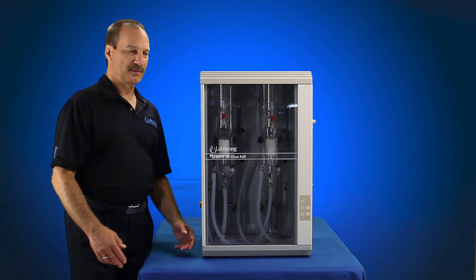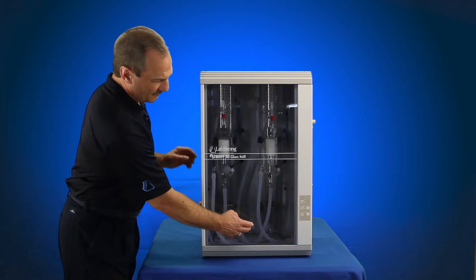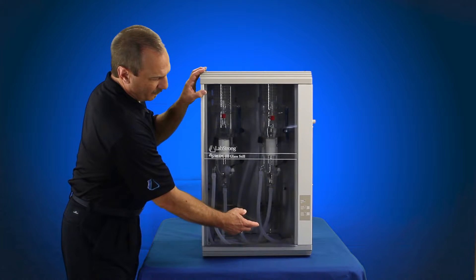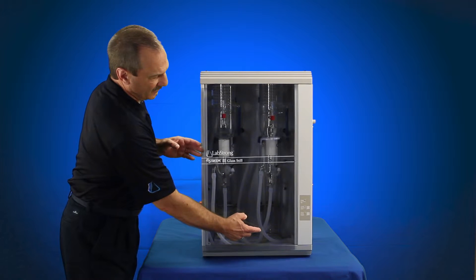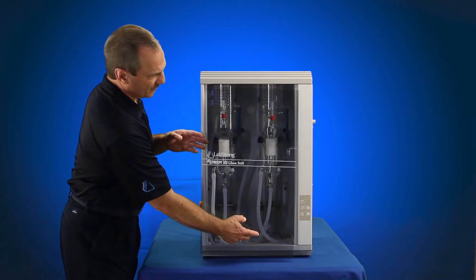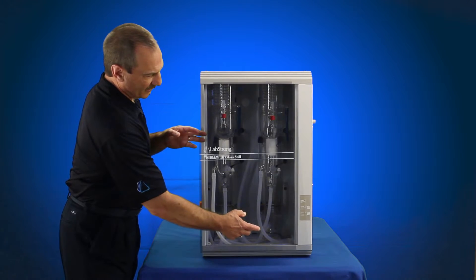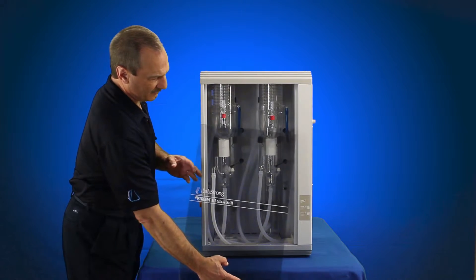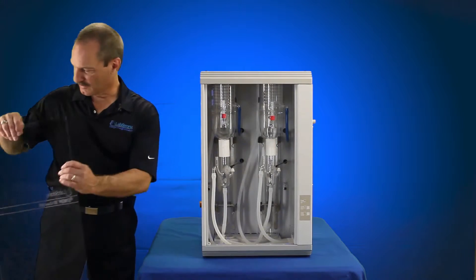Now we're going to remove the door from the 8L per hour 5Stream 3 system. The 5Stream 3 4L per hour system single distilled has the same type of door, it's just a little smaller. You're just basically going to lift up, pull out of the bottom, pull the top down and you remove the door. Set that aside.